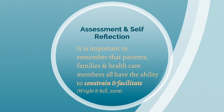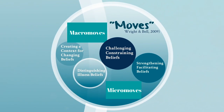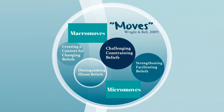A health care member is then able to determine which beliefs constrain or facilitate health positivity and internal contentment despite illness. Wright and Bell state that health care providers, families, and patients are alike in that each person is able to influence lives, relationships, behavior, illness, suffering, and healing. The Illness Beliefs Model uses the term 'moves' to express the relationship and exchange that occurs between the health care team member and the family. The macro moves defined by Wright and Bell are: creating a context for changing beliefs, distinguishing illness beliefs, challenging constraining beliefs, and strengthening facilitating beliefs. The model also uses the term 'micro moves' to explain the interventions used during therapeutic conversations to achieve the macro moves.